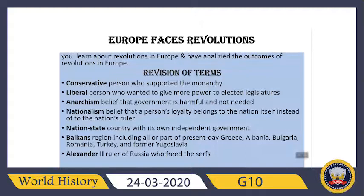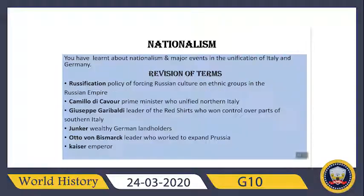Balkans — a region including all or part of present-day Greece, Albania, Bulgaria, Romania, and Turkey. This whole region is known as the Balkans. And then Alexander — the ruler of Russia who freed the serfs.